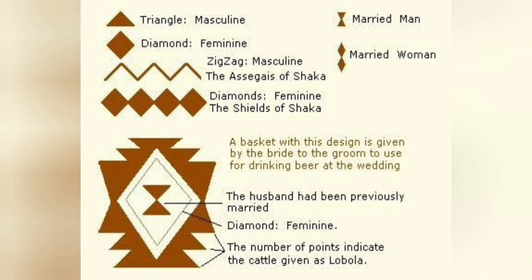Comparing to the Zulu symbols: the triangle pointing up is masculine, the diamond is feminine like the Amazigh one. The zigzag represents masculine, but it also represents lightning. The diamond is feminine, and it also represents a shield. The triangle pointing up and the triangle pointing down — because the triangle pointing up is male and the triangle pointing down is female — that resembles married men. But the diamond pointing up and the diamond pointing down touching each other represents a married woman.